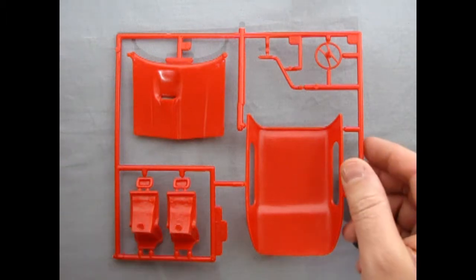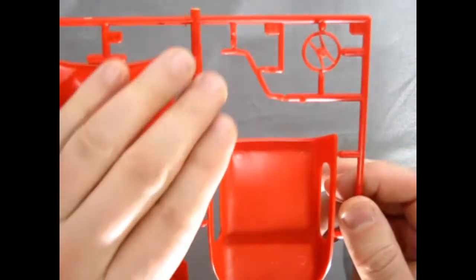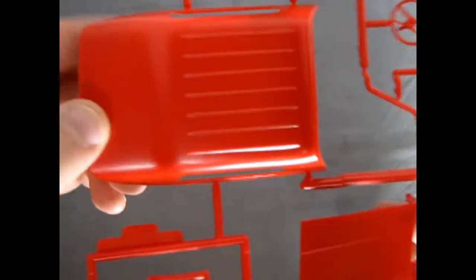Our last red parts tree includes the camper top, the hood, and our bucket seats, as well as the exhaust pipe, and our steering wheel. And if we turn it over,